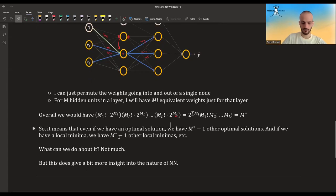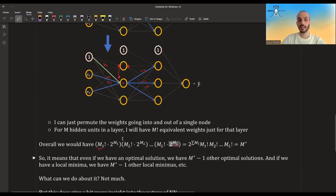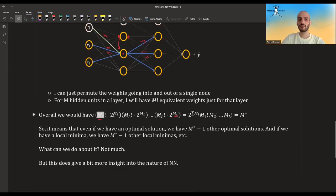And let's say we have L layers with different number of nodes written as M1 to ML. And the layers here, I'm referring to the hidden units layers. Then we would have this amount of symmetries for the first layer times this amount of symmetries for the second layers, et cetera, until this amount of symmetries for the final layer.